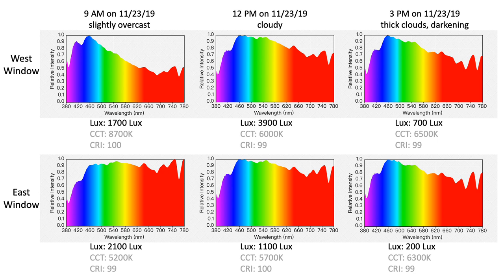The far left range of light is UV light, which is emitted at a higher value in natural light compared to artificial lighting systems. We'll also see far-red infrared light on the far right, which is not emitted as much in our artificial lighting systems.